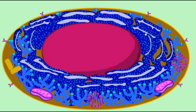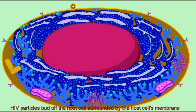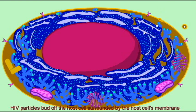The HIV virus is not like many viruses which cause the infected host cell to burst. Instead, HIV will bud from the host cell, one viral particle at a time, thus becoming surrounded with a part of the host cell membrane.